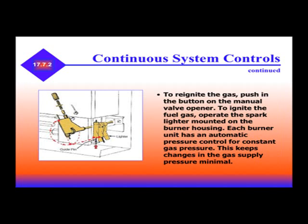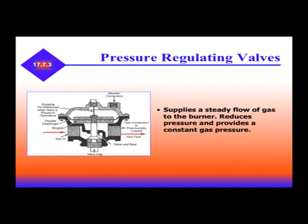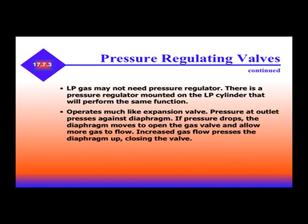To reignite the gas, push in the button on the manual valve opener. To ignite the fuel gas, operate the spark lighter mounted on the burner housing. Each burner unit has an automatic pressure control for constant gas pressure, keeping changes in gas supply pressure minimal. Newer units may have a tilt control system that senses when the unit is not level and diverts heat away from the generator. When leveled, heating begins again. Constant level changes may result in blockage or shutdown of the absorption system. The pressure regulating valve supplies a steady flow of gas to the burner. LP gas does not need an additional pressure regulator, as a pressure regulator mounted on the LP cylinder performs the same function.